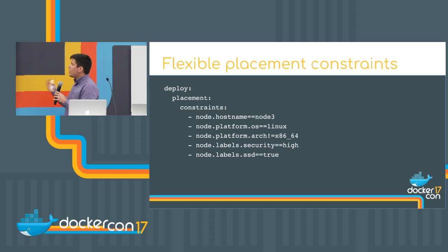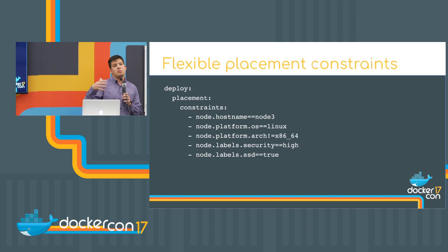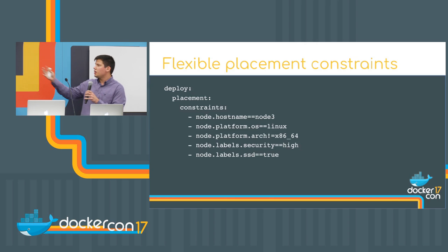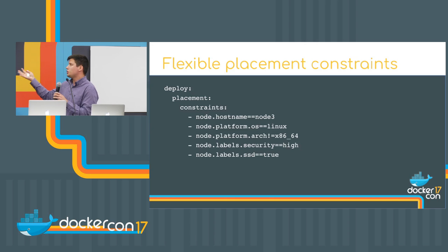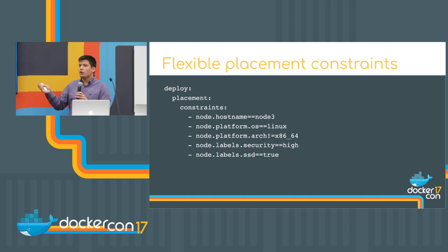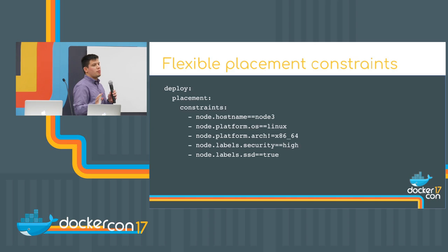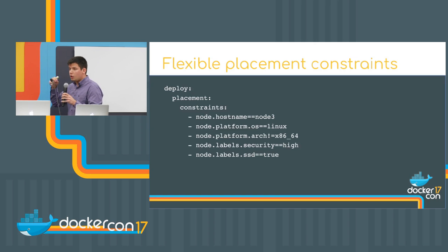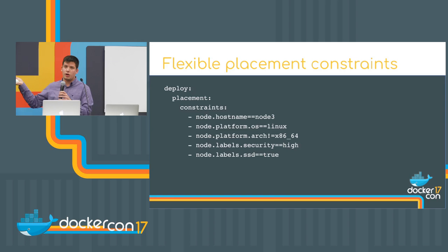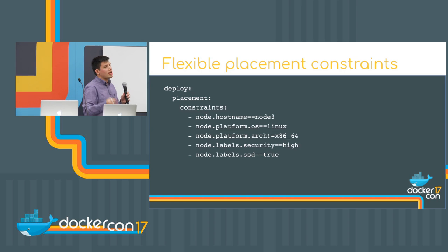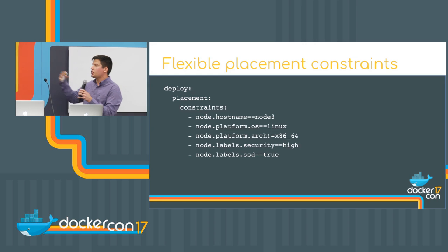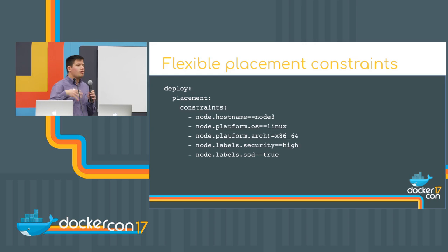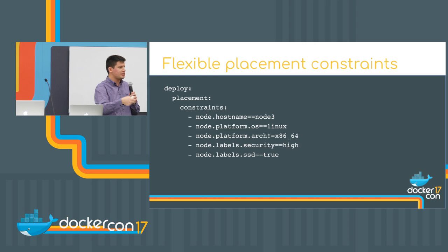You can also use placement constraints — for example, sending a service to a specific node. You can have Swarms from different operating systems, with some Windows machines and some Linux machines, and define which services run only on certain operating systems. This extends to architecture as well. You can also use your own labels: label your cluster for DCI compliance, security nodes, or IO-intensive services where you want nodes with an SSD drive underneath.